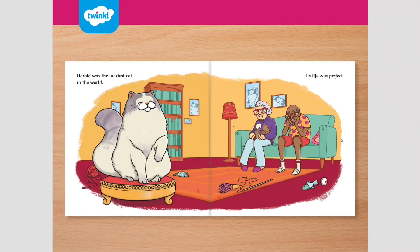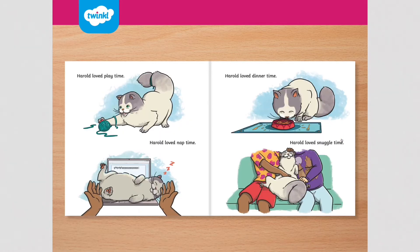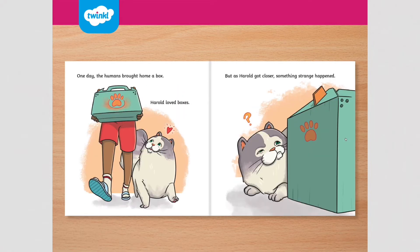Harold was the luckiest cat in the world. His life was perfect. Harold loved playtime. Harold loved nap time. Harold loved dinner time. And Harold loved snuggle time. One day the humans brought home a box. Harold loved boxes. But as Harold got closer, something strange happened.